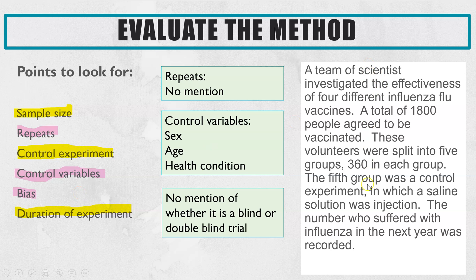If the method has discussed these factors, you then need to decide whether they have a good sample size, whether they've repeated it enough times, and whether it is biased or not.